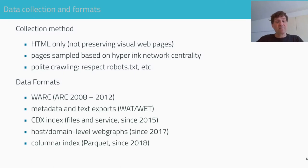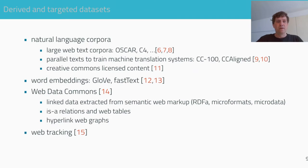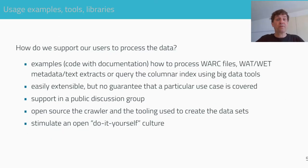The data formats, especially the secondary ones, can evolve over time, but we are conservative in changing the set of provided formats. How do we support our users to process the data? We provide examples on how to process the WARC files, metadata and text extracts, or how to create the columnar index. The examples include programming code and documentation and are based on big data tools to allow scaling up. Although easily extensible, there is no guarantee that a particular use case is covered in our examples.